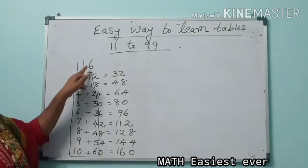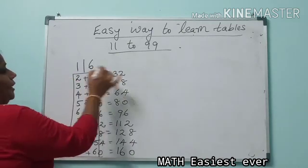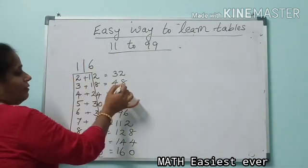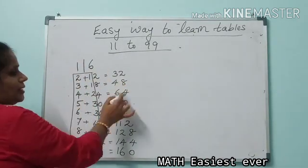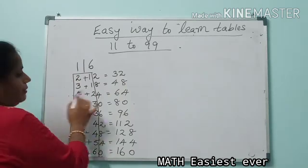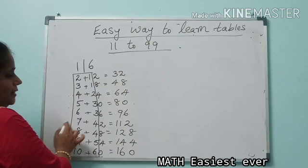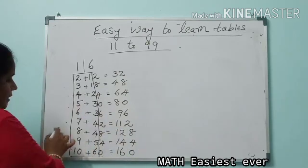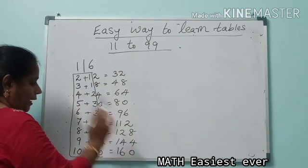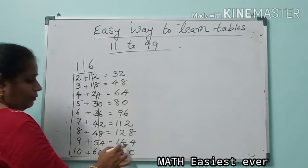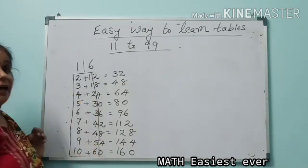16 ones are 16, 16 twos are 32, 16 threes are 48, 16 fours are 64, 16 fives are 80, 16 sixes are 96, 16 sevens are 112, 16 eights are 128, 16 nines are 144, 16 tens are 160.